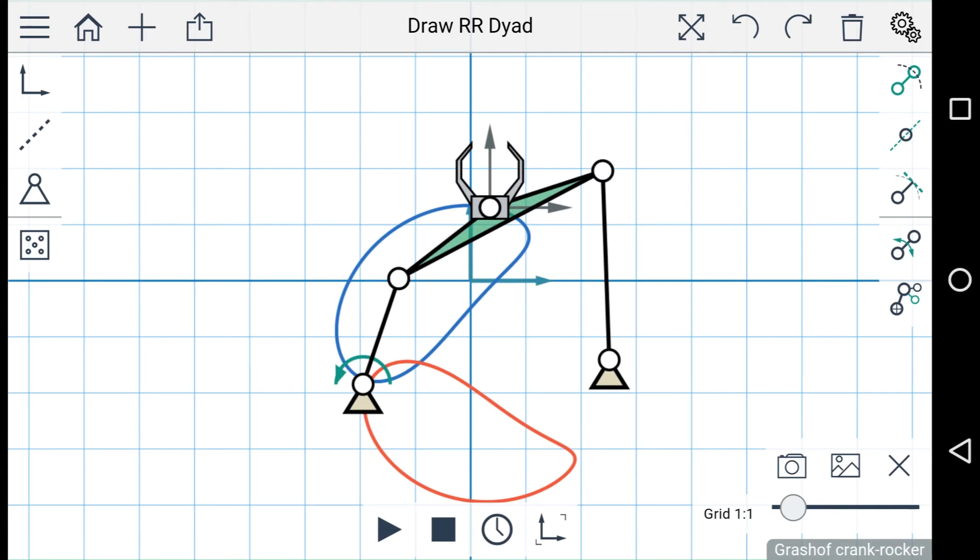This first button allows you to switch the driving link. And the second button allows you to change the configuration of the linkage.